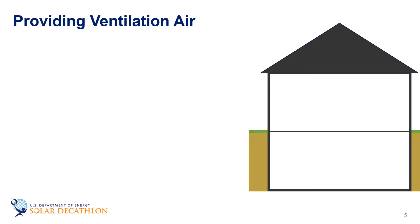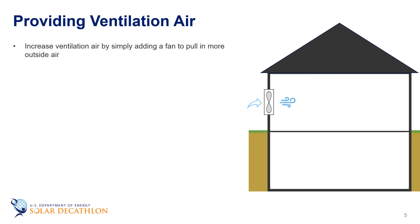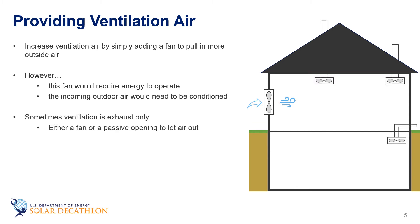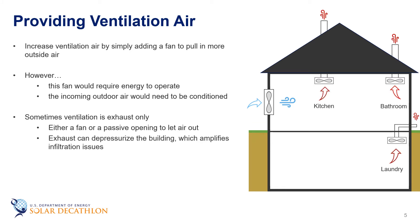The bottom line is that we need to increase the ventilation air. We can just add a fan and bring in more outside air, but remember, not only does the fan use energy, but we also need to condition the outside air that comes in. Sometimes the ventilation is exhaust only. For this, we would either need a fan to remove some air or create a hole in the building and let some air out. Bathroom fans, dryer vents, and range hood vents all extract air from the building.